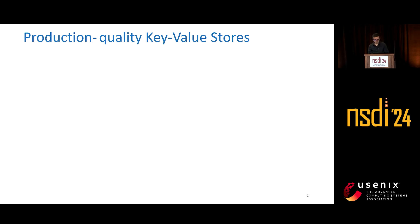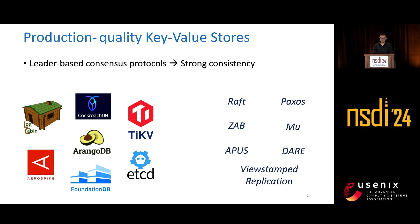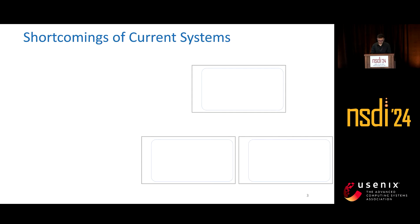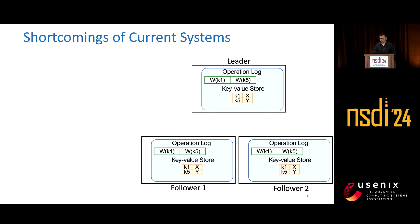Production quality Key-Value Stores today, such as LogCabin and CockroachDB, use leader-based consensus protocols to ensure strong consistency. Examples of such protocols are Raft and Paxos. Let's take a look at how some of these Key-Value Stores work. They typically consist of one leader and multiple followers or replicas. Each machine has an operation log as well as its own local Key-Value Store.